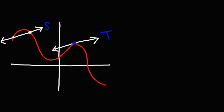Now the normal line is similar to the tangent line in that it touches the curve at one point, but with a difference. That difference is that the normal line is perpendicular to the tangent line. So they meet at a 90-degree angle and therefore the slopes are a bit different.